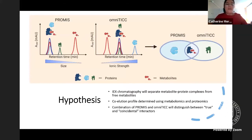The hypothesis was that ion exchange chromatography would be able to separate metabolite protein complexes from free metabolites. Co-elution of metabolites and proteins determined using metabolomics and proteomics will allow us to identify putative PMIs. Moreover, we expect that by combining results from PROMIS with OmniTIC, we will be able to distinguish between true and coincidental interactors.